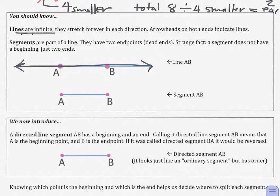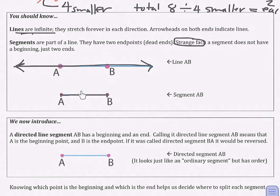In a line segment, though, you will be able to break it up because a line segment is part of a line and has two endpoints, A and B. One of the strange things about a segment is that a segment truly does not have a beginning and an end. Typically we sometimes say the leftmost point is sort of like the beginning when we're counting slope, but if it's just called a segment, either end is considered just an end — there's no beginning to it.